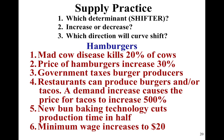Scenario four, restaurants can produce burgers or tacos, and a demand increase caused the price for tacos to increase 500%: the determinant is cost of alternative production. The opportunity cost of producing burgers is very high because prices in the taco market have gone way up, so the restaurant could make more money producing tacos. Scenario five, new bun-making technology cuts production time in half: that is an outward shift to the right because of technology. Scenario six, minimum wage increases to $20: that is an inward shift or decrease in supply, and the determinant is cost and availability of inputs.